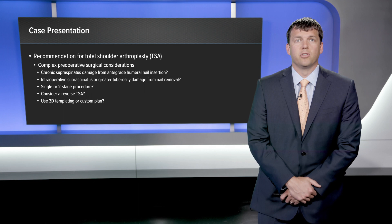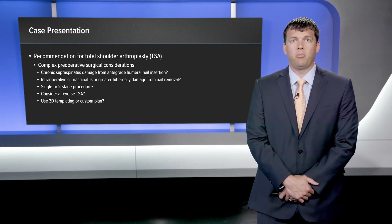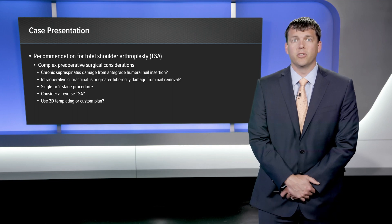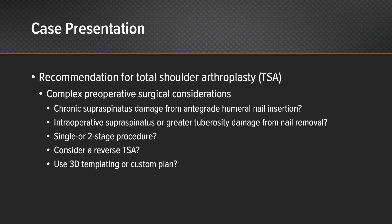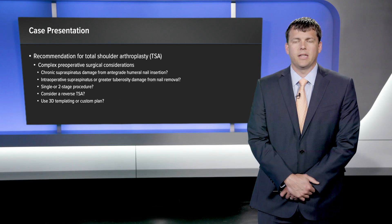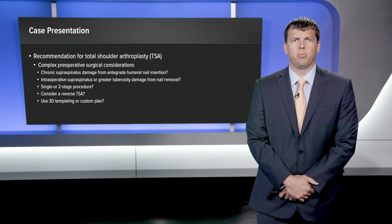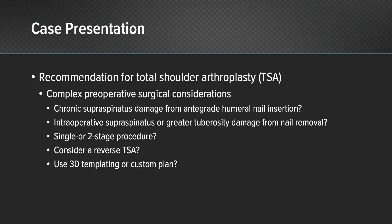The recommendation was made for total shoulder arthroplasty, and there are several complex preoperative surgical considerations. Does the patient have chronic supraspinatus damage from placement of his antegrade nail done years ago? Could there be damage to the supraspinatus or the greater tuberosity from removing this nail? Should we do this in a single stage or a two-stage procedure — take the nail out and do the total shoulder simultaneously, or stage them? Should we consider a reverse total shoulder arthroplasty? And should we utilize 3D templating or a custom plan?